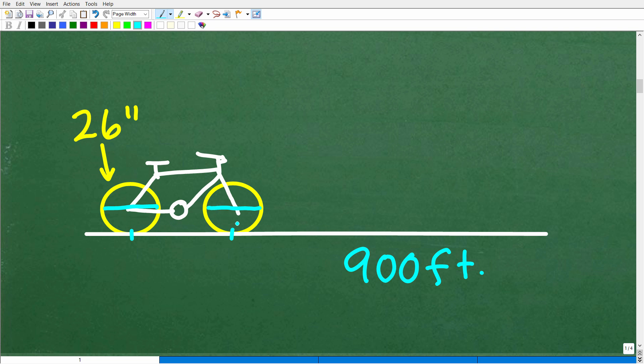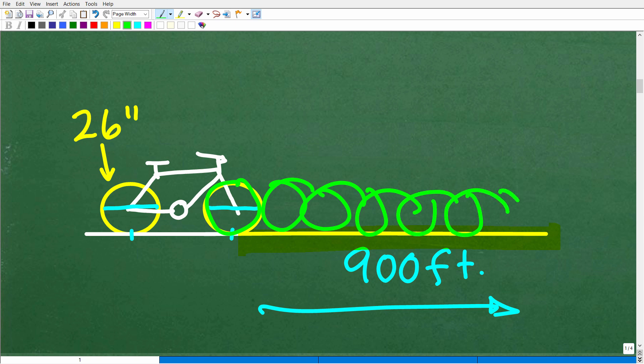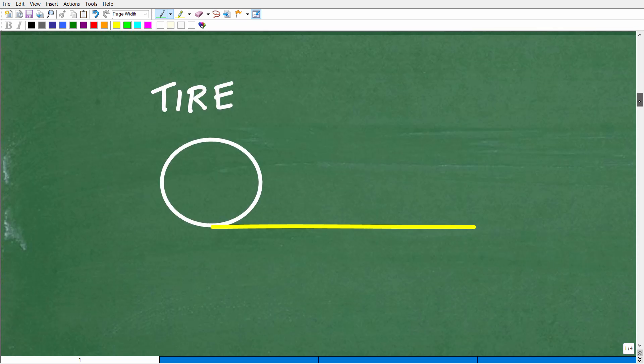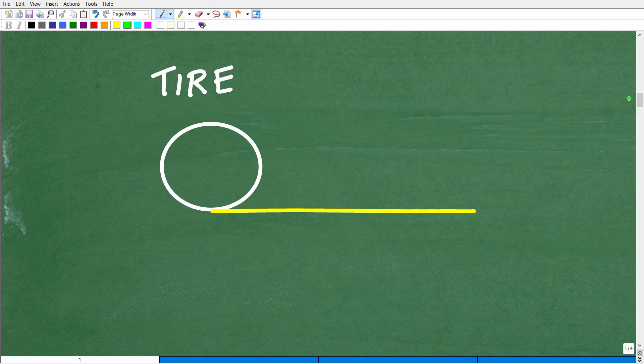So this is the situation. We have this bike with 26 inch tires and it's going to ride for 900 feet. And the question is, how many times are these tires going to turn to cover this 900 foot span? So that is a revolution. So what do we need to do here? Well, the first thing we need to do is understand the concept of circumference. Because if you don't understand this, then you're not going to be able to figure out the problem.